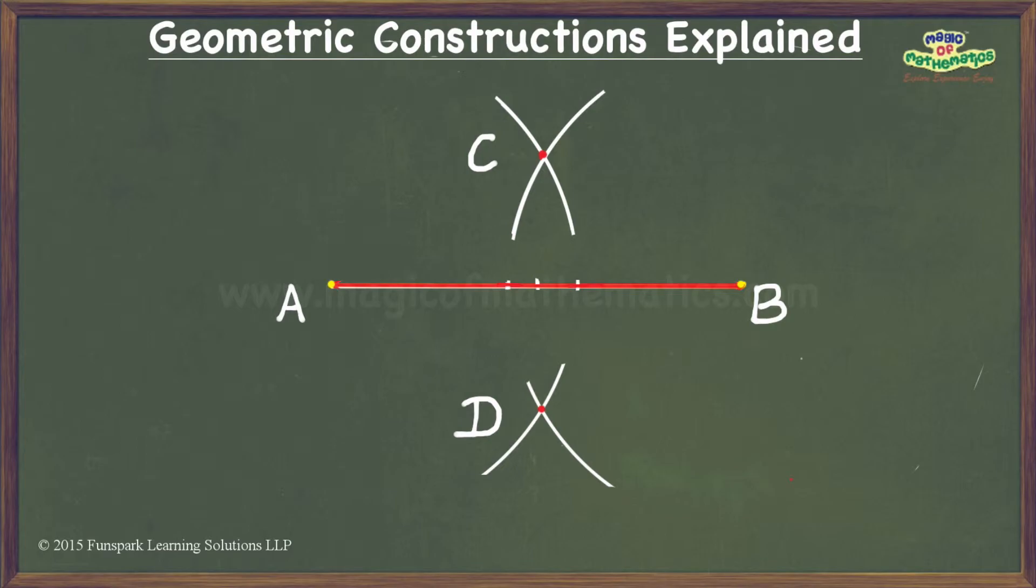I now have the remaining two vertices of my rhombus. All I need to do is to draw a line through these two points. As we know this is the perpendicular bisector of the given line segment and hence my construction is complete.